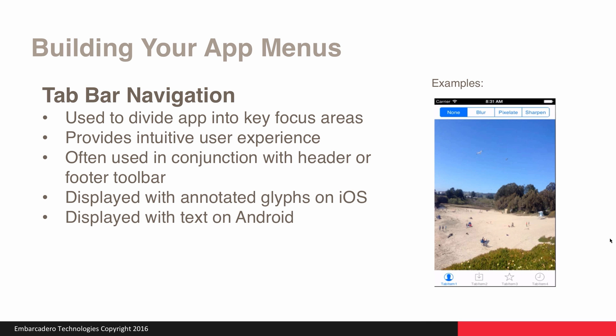Tab-bar navigation is used to divide your application into key focus areas. It provides a very intuitive user experience, allowing the user to easily find key functionality within the app — for example, Home, Search, New Email, and Settings. It's usually displayed with annotated glyphs on the bottom on iOS, and displayed with text on Android at the top. We have built-in behavior services in FireMonkey — if you set the tab control to platform, it will automatically display as a top-aligned tab on Android and a bottom-aligned tab on iOS.